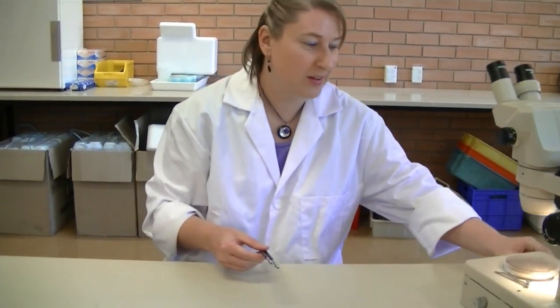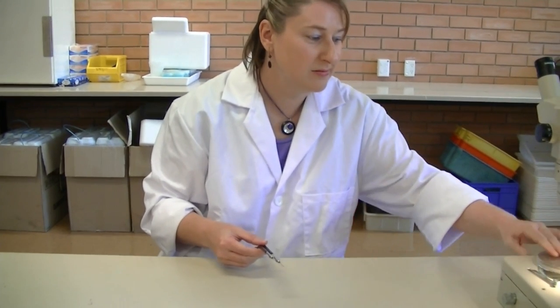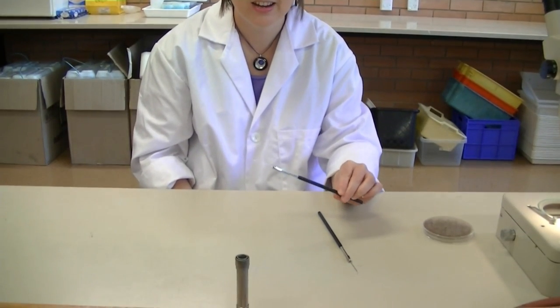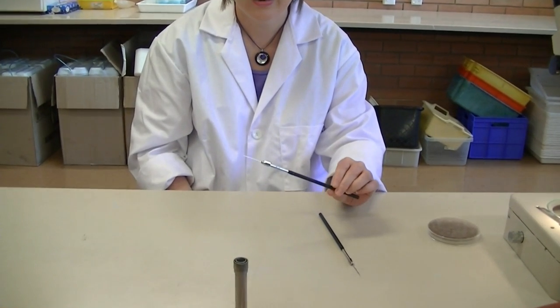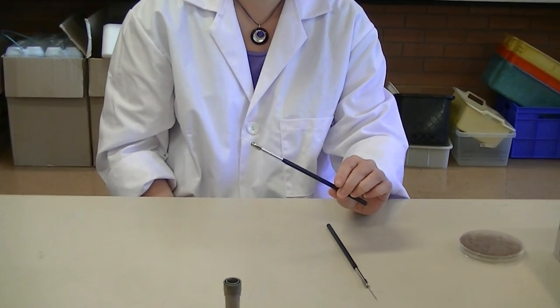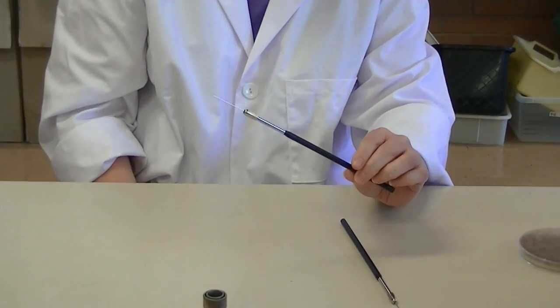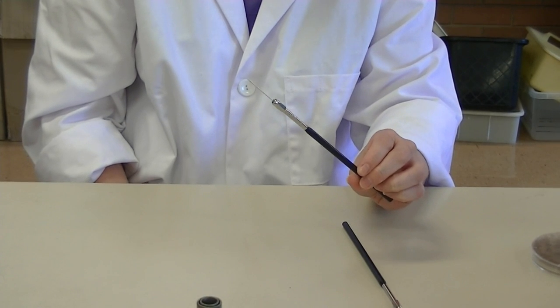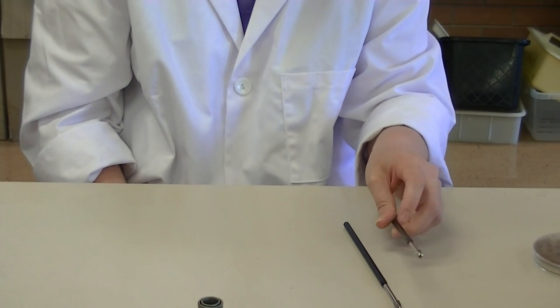There are some other key tools which you need to use when preparing a fungal sample and that includes needles. So these need to be sterilized and you can sterilize them in a similar way to your loop as you would when you're streaking bacteria. Dipping them in alcohol and then flaming them in the flame to burn off the excess alcohol.